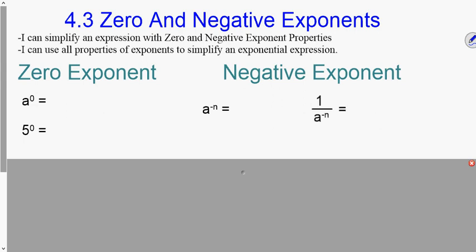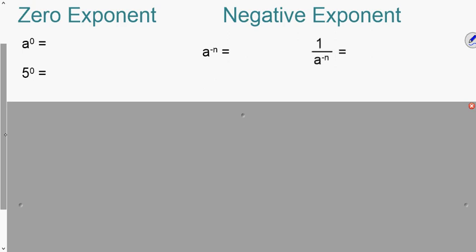So we have two properties. The first one is pretty straightforward. Anything to the zero power is one, as long as a is not zero. Zero to the zero is not a thing. But as long as a is not zero, anything to the zero power is one.